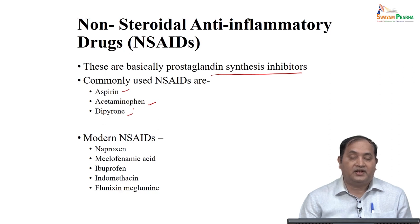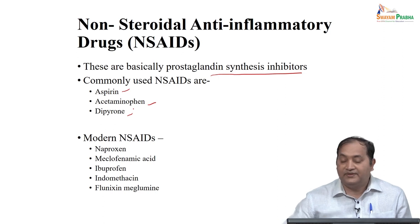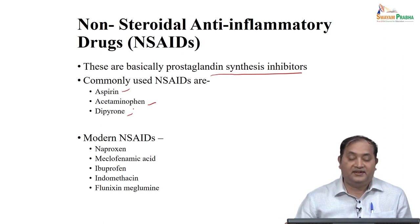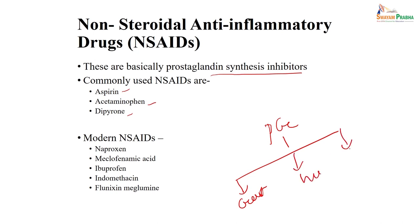Some NSAIDs act only as COX-2 inhibitors. The major problem with NSAIDs was that they cause gastritis. Since they inhibit prostaglandins, which are vasodilators, if you inhibit vasodilatation there is a chance of gastritis. There could be similar actions like hepatotoxicity or decreased blood flow to the kidney causing renal toxicity. So gastritis, hepatotoxicity, and renal toxicity are the class effects of NSAIDs.